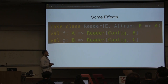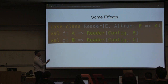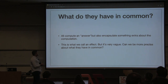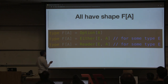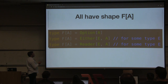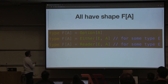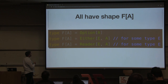A Reader is another type of effect: if you give it some E it will be able to give you back an A. This can be used for providing configuration to a chain of computation. What do they all have in common? They all compute an answer but also encapsulate something else about the computation — this is what we call an effect. These all have the shape of some type F that takes another type to become a fully defined type.